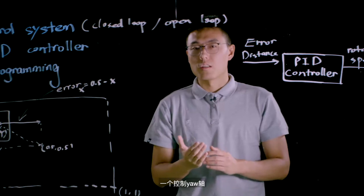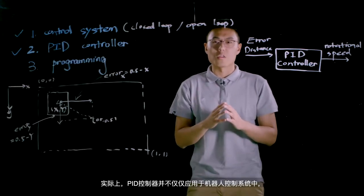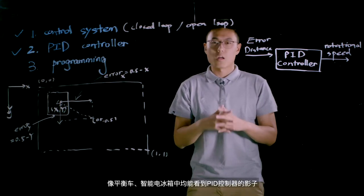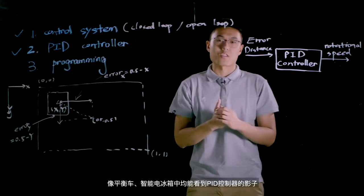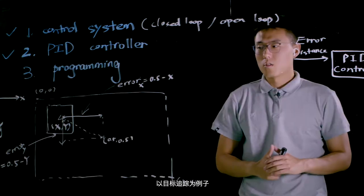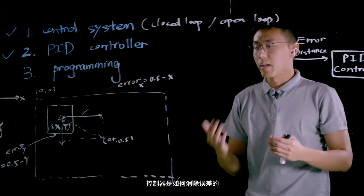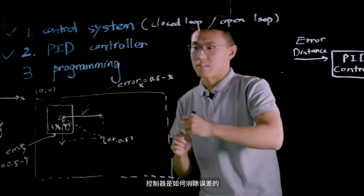There are two PID controllers governing the motion of gimbal. One for pitch motor, another one for yaw motor. Actually PID controllers are not only used in robot control systems, but also found in many other applications such as smart refrigerators or hoverboards. So for example of object tracking, we need to know how the PID controller eliminate the error on x-axis.